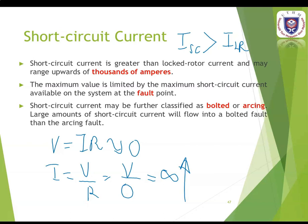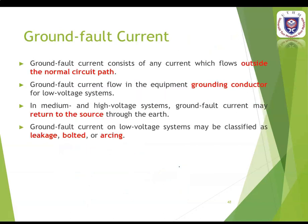By definition, a bolted fault has no fault impedance, while an arcing fault current has impedance associated with the arc. Therefore, the bolted fault has higher fault current magnitude than the arcing fault. Ground fault current consists of any current which flows outside the normal circuit path. Ground fault current flows in the equipment grounding conductor for low voltage systems. In medium and high voltage systems, ground fault current may return to the source through the earth.